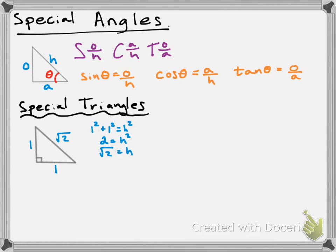Now for the angles — remember this is an isosceles triangle, so the two angles next to the equal sides are the same. We also know all angles in a triangle add up to 180 degrees, and we already have a 90-degree angle. The only possibility is that the two remaining angles are both 45 degrees, since 45 plus 45 plus 90 equals 180. So this is our first special triangle — a 45-45-90 triangle — and I want you to memorize it.